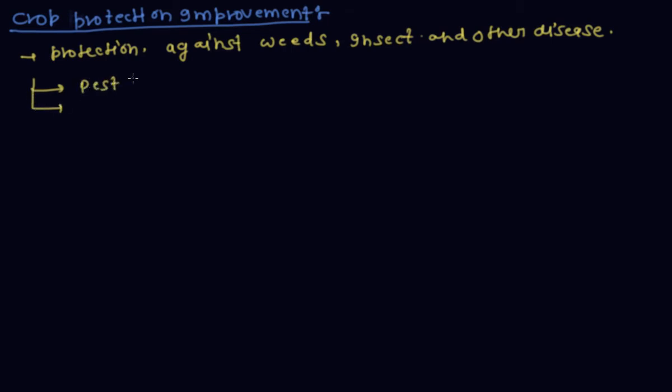Two methods: first method is pest control during growth, and second is storage of grains.